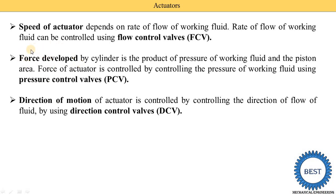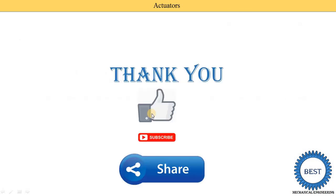To summarize: for controlling the force developed, we need to control the pressure since force is directly proportional to pressure times area. To control the speed of the actuators, we use flow control valves (FCV). Thank you for watching this video — if you learned something, please like the video, subscribe to the channel, and share with your friends.